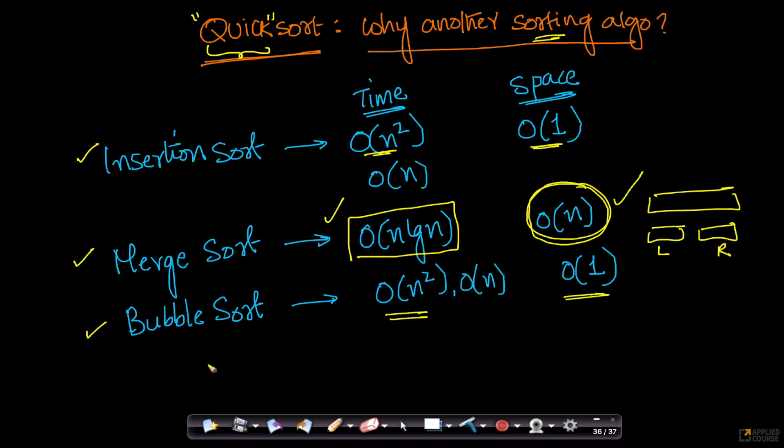So is there some other algorithm that can give me merge sort like order of n log n time complexity, but something much less than order of n? Can I get something like order of log n or even order of 1? Is that possible?